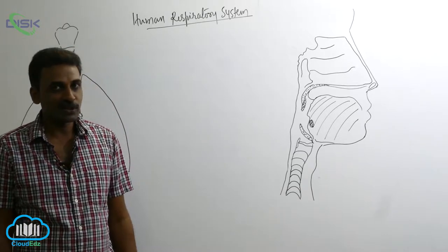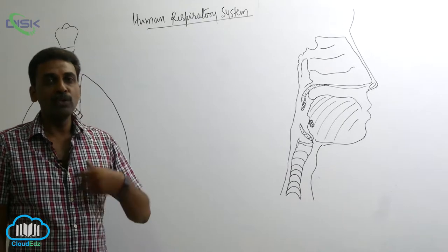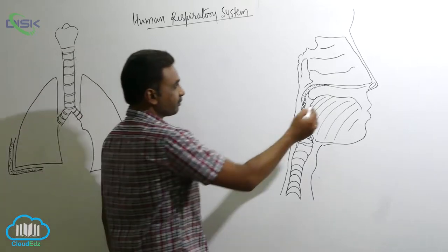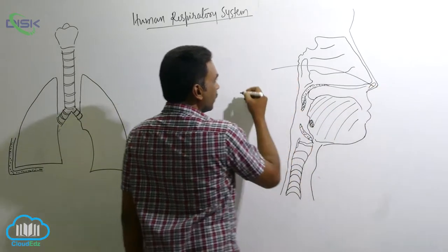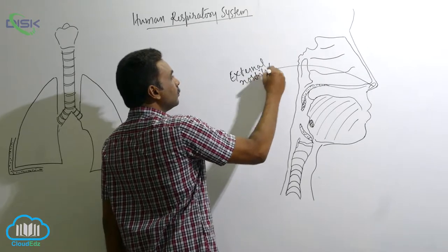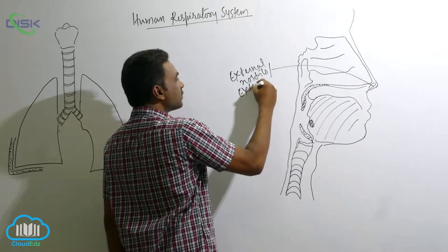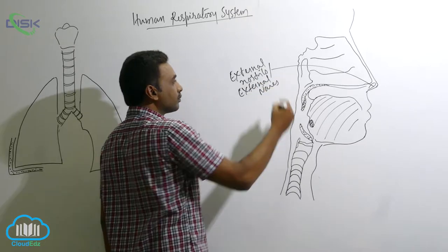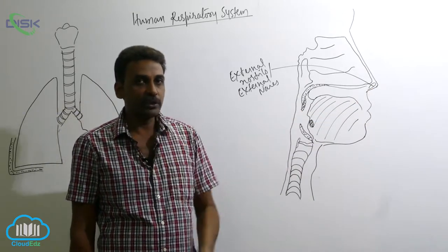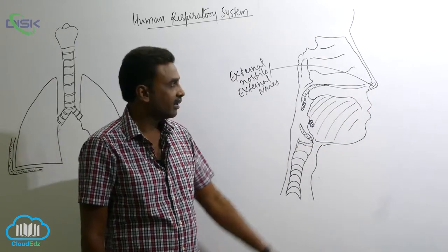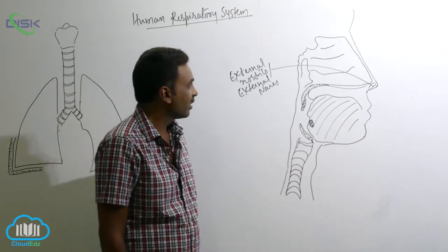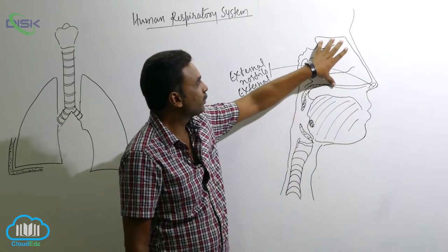Let us discuss the human respiratory system today. In the human respiratory system, we have a pair of external nostrils, also called external nares. A pair of external nostrils are present at the tip of the nose above the lips. Through the external nostrils, air is inhaled inside. External nostrils open into nasal cavities.